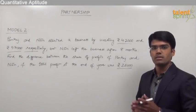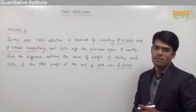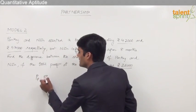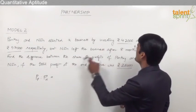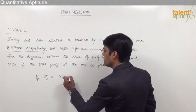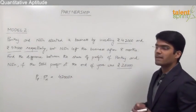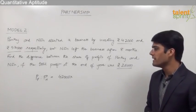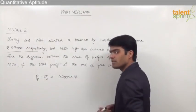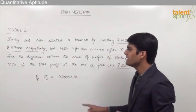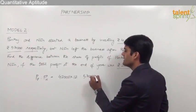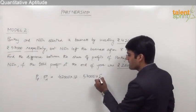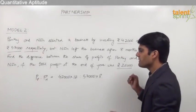To solve this question we first need to find out the ratio in which the profit is shared by Pankaj and Nitin. Profit of Pankaj is to profit of Nitin equals investment of Pankaj, that is 42,000, multiplied by time of Pankaj's investment. Since Pankaj was present for the total period, that is 12 months, and Nitin left after 8 months, Nitin's time is taken as 8 months.